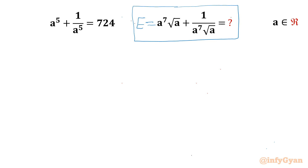Now a belongs to real numbers and a^5 + 1/a^5 is equal to 724. Since we have a square root of a, a must be positive for real a.